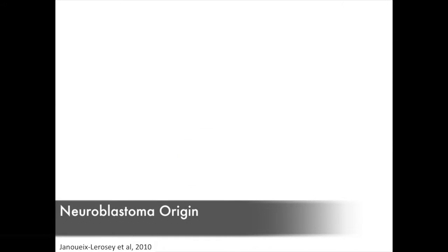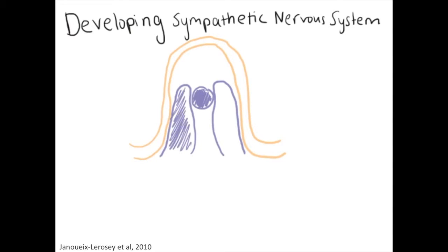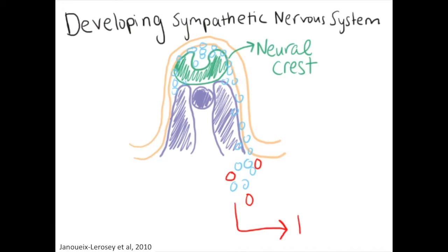Neuroblastoma is an extracranial cancer that arises from the developing sympathetic nervous system. The disease begins with a mutation of pluripotent neuroblastic precursor stem cells in the neural crest which subsequently proliferate and give rise to tumors. This disease primarily affects infants and young children.